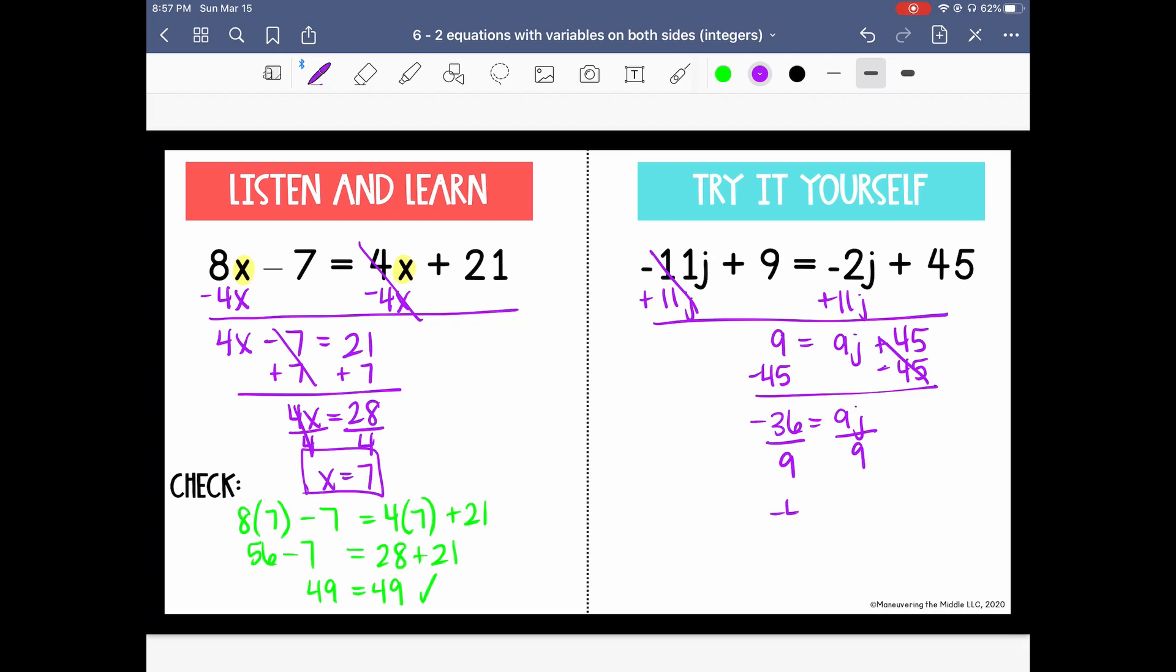And then lastly, we can undo the multiplication of 9 by dividing both sides by 9. So we get negative 4 equals j. Or if we write it with the variable first, j is equal to negative 4.